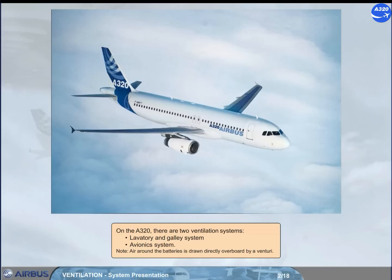On the F320, there are two ventilation systems: the lavatory and galley system, and the avionics system. Note: air around the batteries is drawn directly overboard by Venturi.